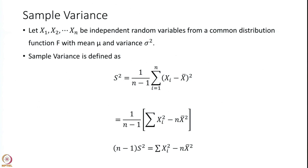Let us begin. We define sample variance — please recall the first few lectures in descriptive statistics, it is exactly the same definition. Let x1, x2, ..., xn be an independent random sample from a common distribution F with mean mu and variance sigma squared. Then sample variance is defined as: S² = (1/(n−1)) × Σ(xi − x̄)², where x̄ is the sample mean. This can be simplified so that (n−1)S² = Σxi² − n·x̄².